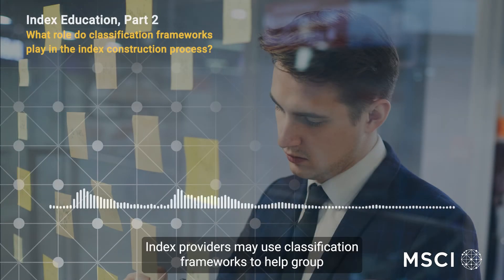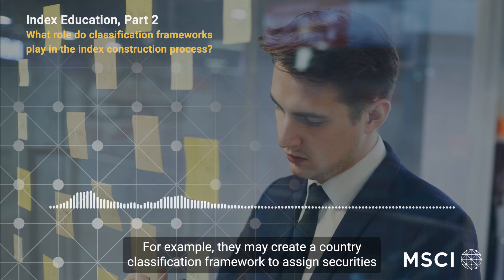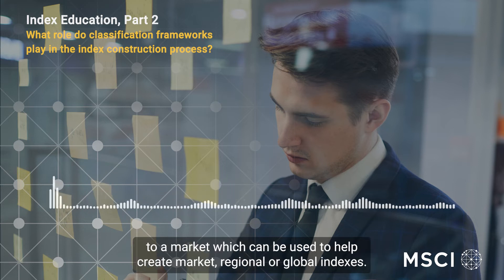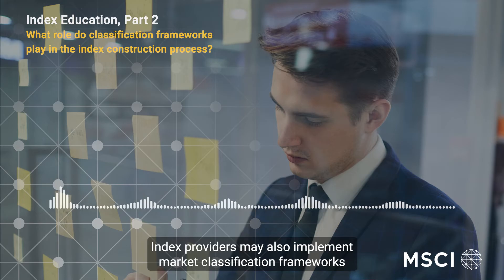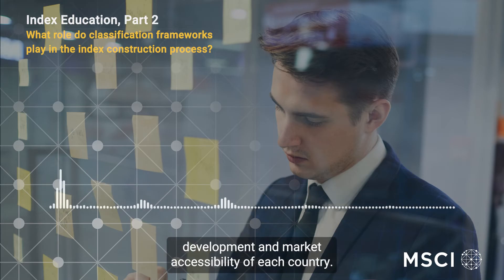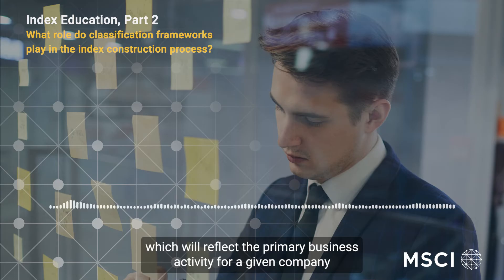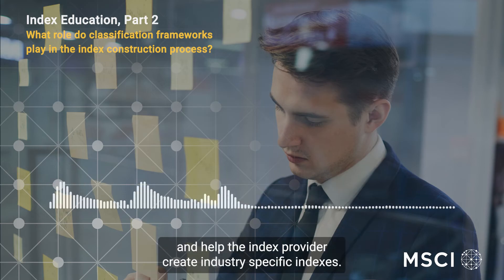Index providers may use classification frameworks to help group securities and gain efficiencies in scale in index construction. For example, they may create a country classification framework to assign securities to a market, which can be used to help create market, regional, or global indexes. Index providers may also implement market classification frameworks to reflect how institutional investors think about the economic development and market accessibility of each country. Another type of classification commonly used is an industry classification, which will reflect the primary business activity for a given company and help the index provider create industry-specific indexes.